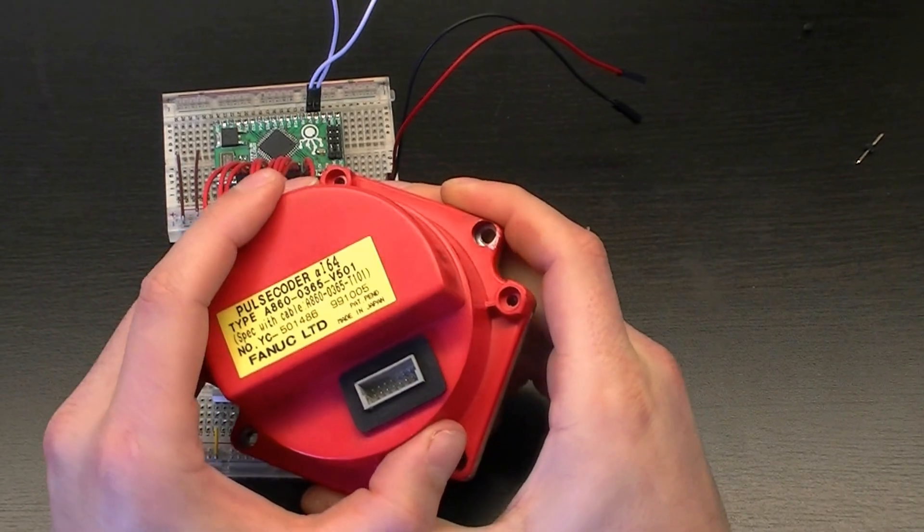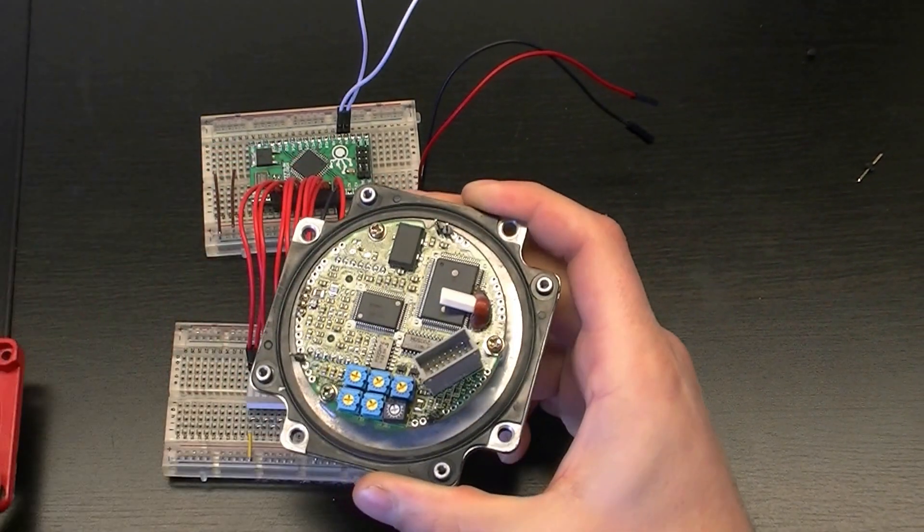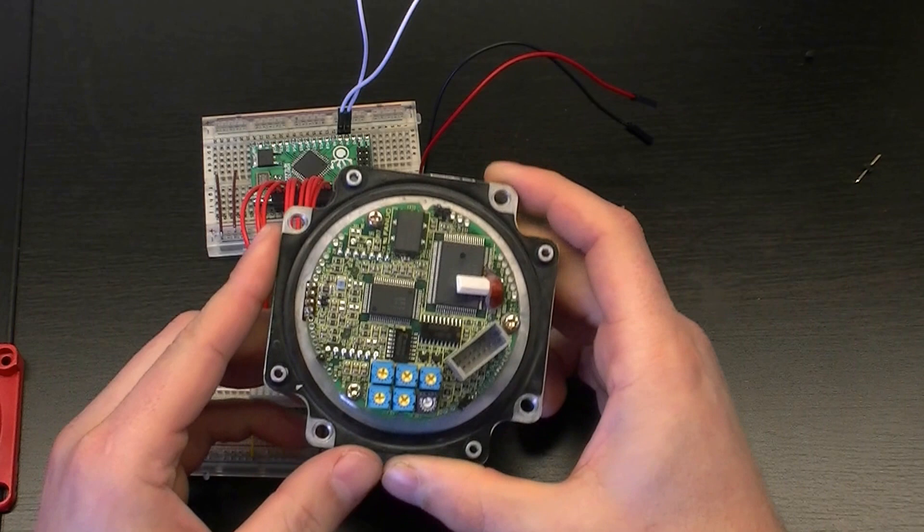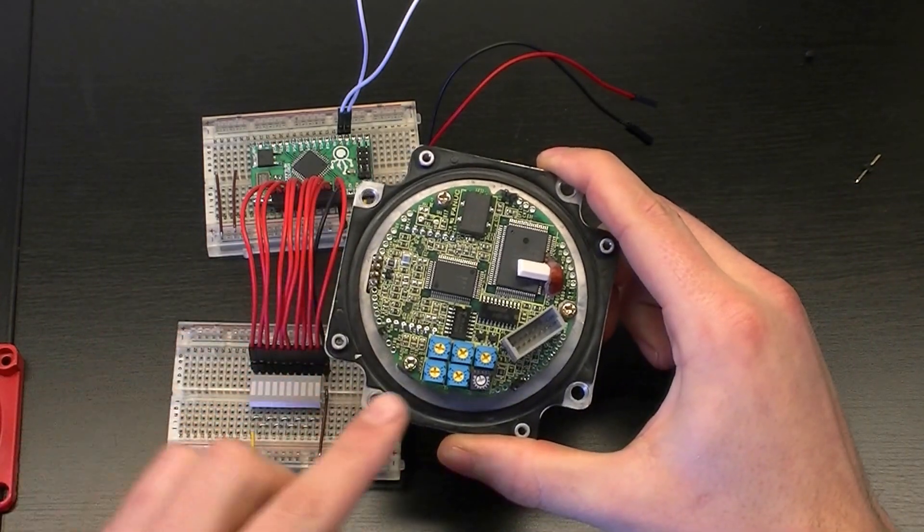Now how it works is inside of here, underneath this circuit board, there's a glass disk. Now that glass disk has a bunch of ticks on it all the way around.